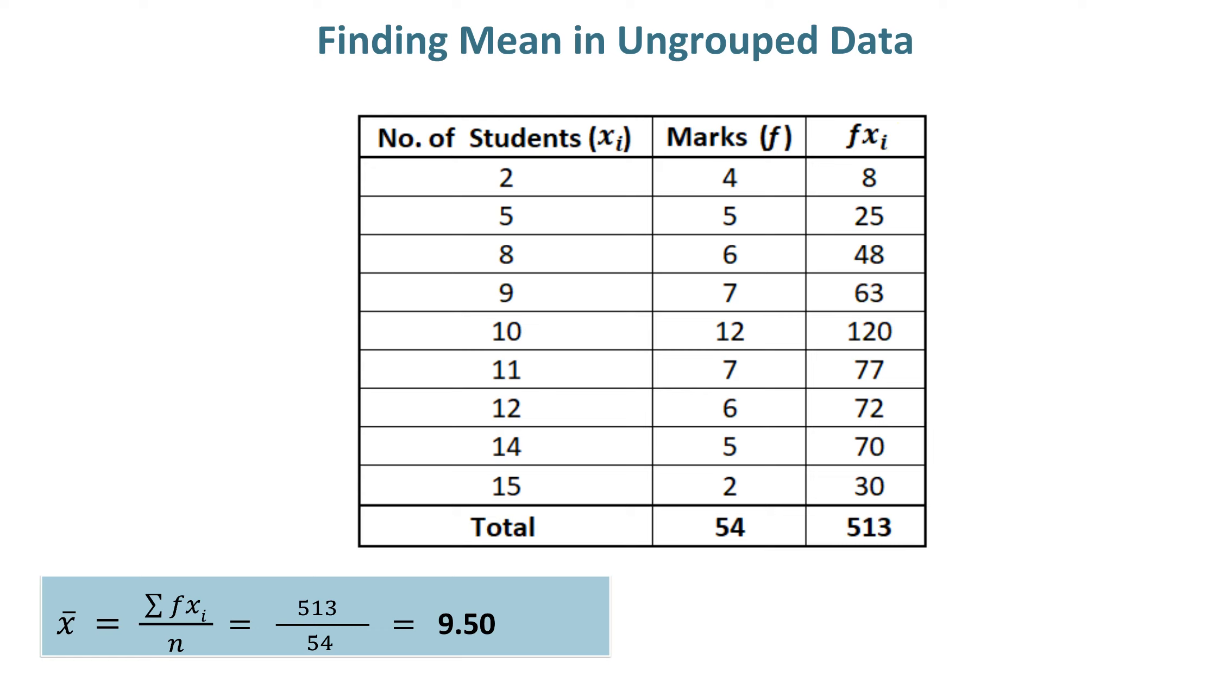After finding all values separately, we will find sum of fxi, which is 513. The mean in this example is 9.50, which you will get by dividing 513 by 54.